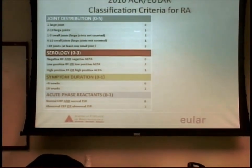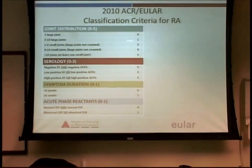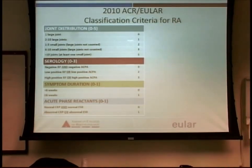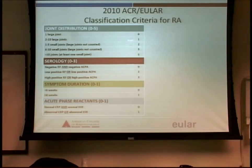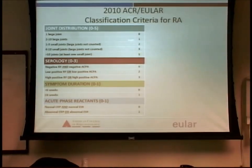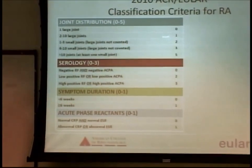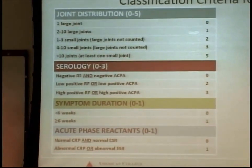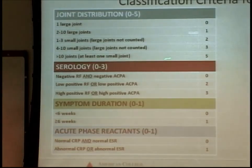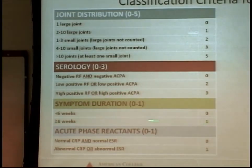The updated ACR/EULAR criteria for RA incorporates the CCP antibody and essentially say: if you have many joints involved, it's likely RA; if you have a rheumatoid factor or CCP, it's likely RA; if it's lasted more than six weeks, it's likely RA; and if your CRP or sed rate is elevated, it's likely RA.